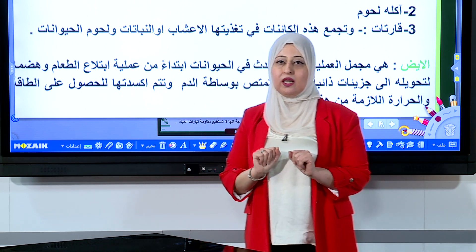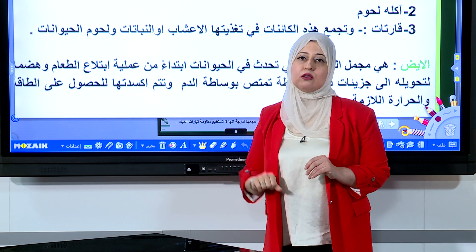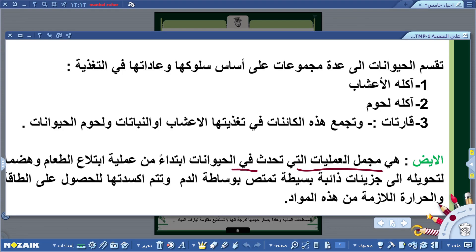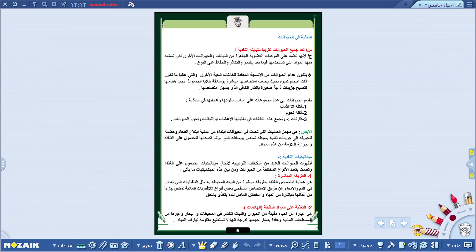ننتقل للتعرف على تعريف الأيض: هو مجمل العمليات التي تحدث في الحيوانات ابتداءً من عملية ابتلاع الطعام وهضمه لتحويله إلى جزيئات ذائبة بسيطة، تُمتص بواسطة الدم، ثم تتم أكسدتها للحصول على الطاقة والحرارة اللازمة.